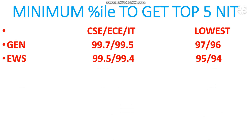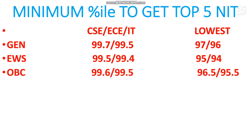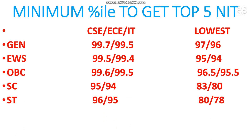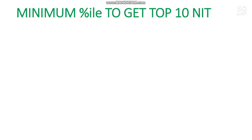For OBC, 99.6 (male) and 99.4 (female) is particularly the CS cutoff; scoring a little lower you can get EC or IT. For the lowest branch: 96.5 and 95.5. For SC category, 95 and 94 percentile is required, and for the lowest branch 83 and 80 percentile. For ST, 96 and 95 percentile is required, and for the lowest branch 80 and 78 for male and female respectively. These are the cutoff percentiles — try to score just above those numbers.